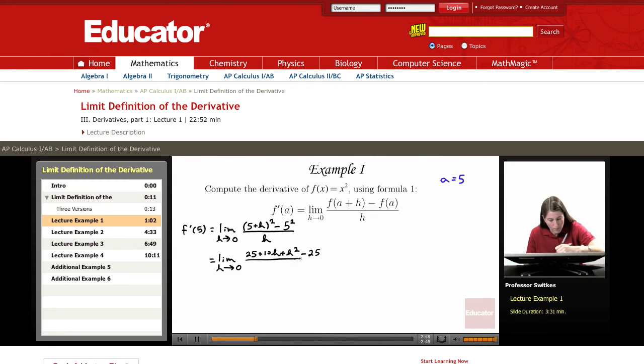Now if we've done things correctly, terms without factors of h should drop out. Notice we have 25 - 25, so those terms where h doesn't appear drop out. Our numerator now becomes 10h + h² all over h, and the 25 - 25 dropped out.